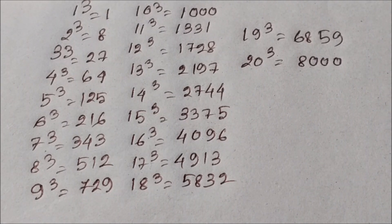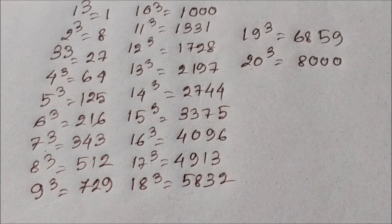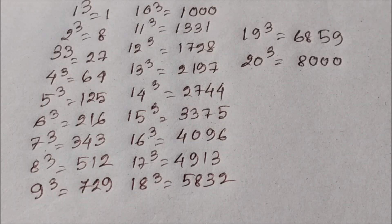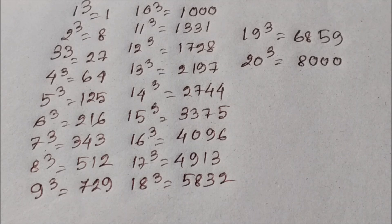1 cube 1, 2 cube 8, 3 cube 27, 4 cube 64, 5 cube 125, 6 cube 216, 7 cube 343, 8 cube 512, 9 cube 729, 10 cube 1000, 11 cube 1331, 12 cube 1728, 13 cube 2197.